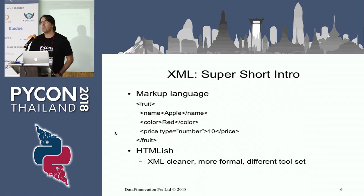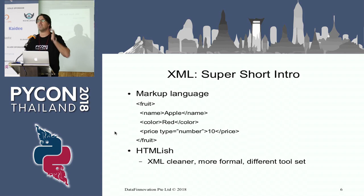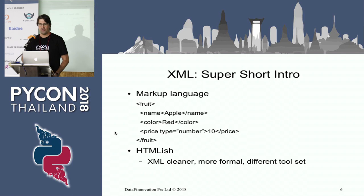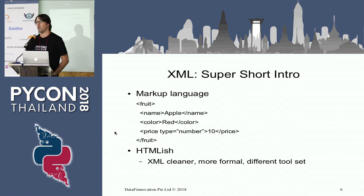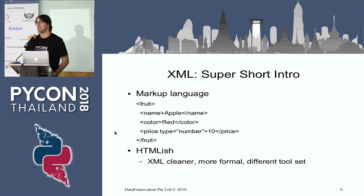Brief introduction to XML. It's a markup language that looks a bit like HTML — some differences in rules, not necessarily important. You've got here an example for a piece of fruit: what it's called, what its color is, its price. What's important is that there are more formal rules here. A web browser handles broken HTML gracefully, whereas your XML needs to be correct. Because of that requirement for correctness and strict grammars and formats, we can do a lot of interesting, powerful things quickly.